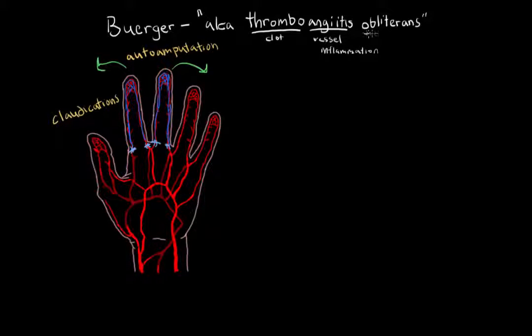And lastly, obliterans, which is a term for artery occlusion or artery blockage. Obliterans pretty much just means blockage. So here we've got clot formation, vessel inflammation, and blockage. We can think there's vessel inflammation in this disease causing a clot, which creates a blockage in blood flow. And so you see these symptoms of claudication and auto-amputation. Death of the cells, necrotizing vasculitis.